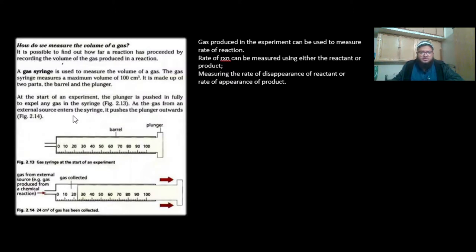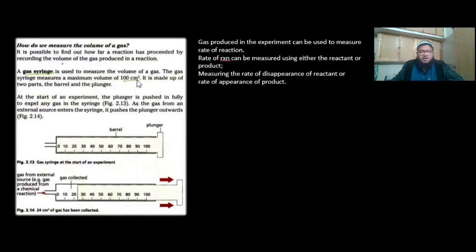You guys have heard of a gas syringe, and we've already talked about gas syringe in the previous videos. A gas syringe is basically the instrument that we are going to use to collect a gas and then use the same instrument — the same gas syringe — to measure that particular gas. A gas syringe is used to measure the volume of a gas, and it measures a maximum of 100 cm³. This is important.